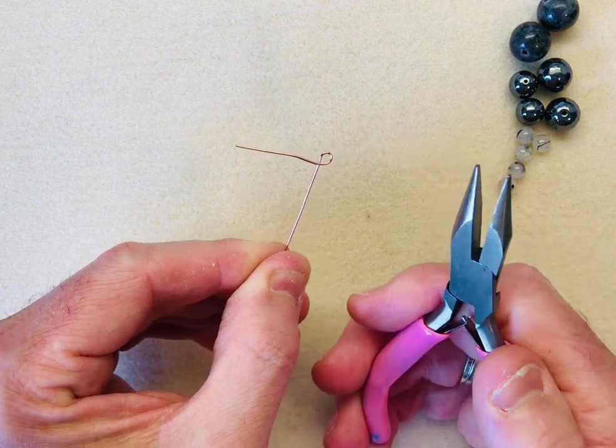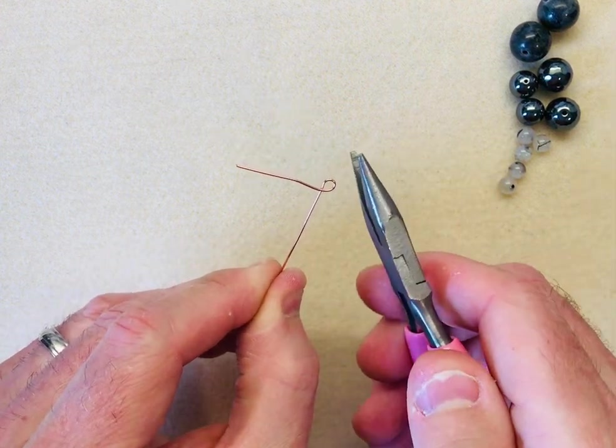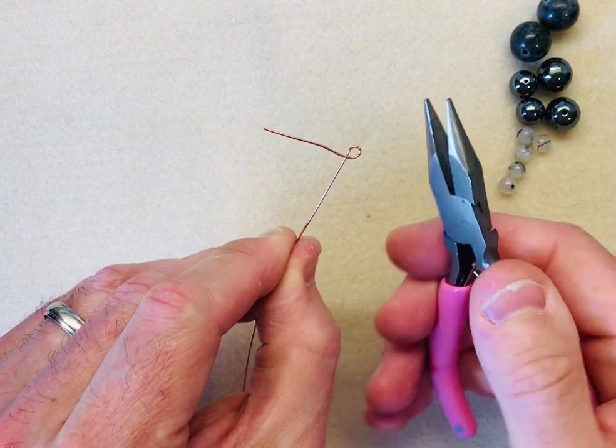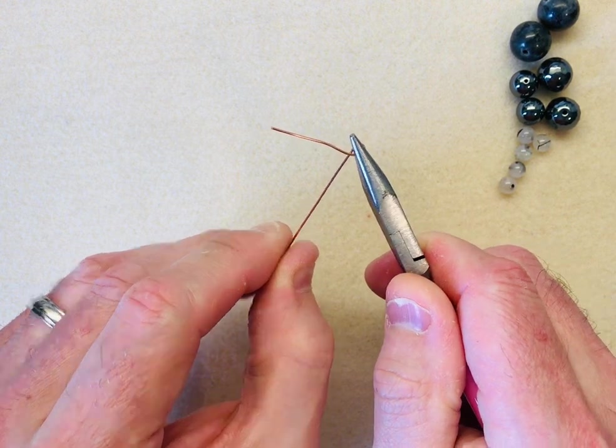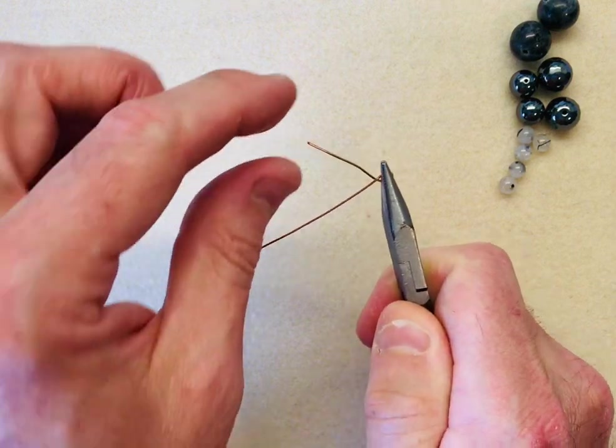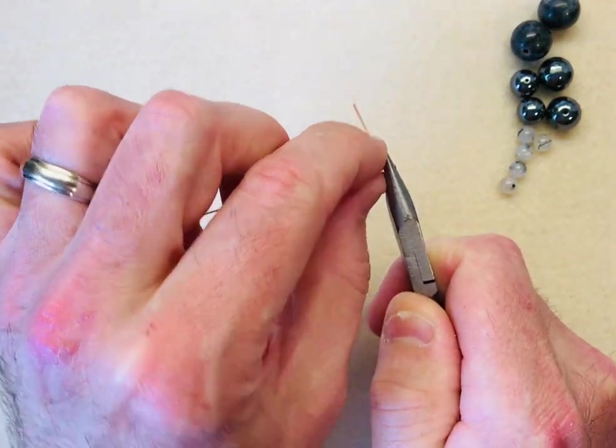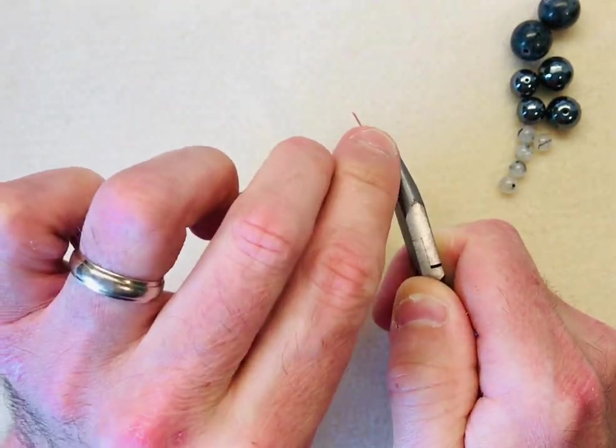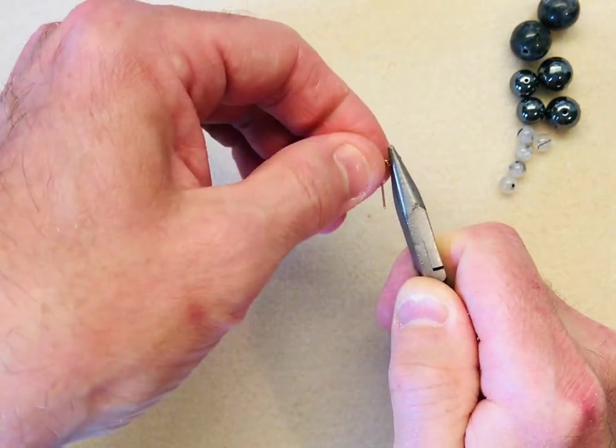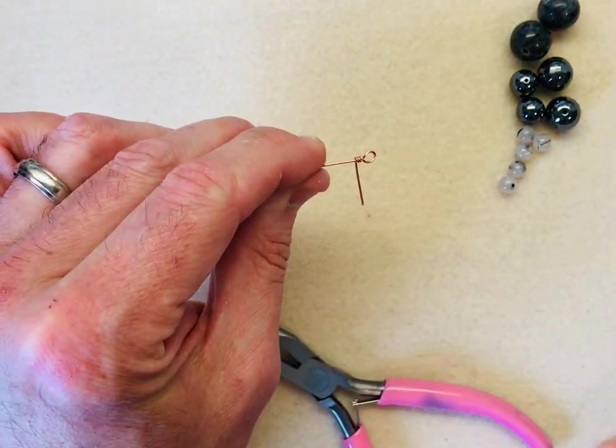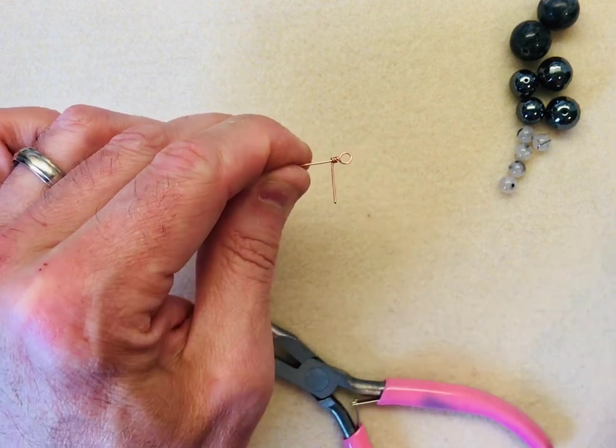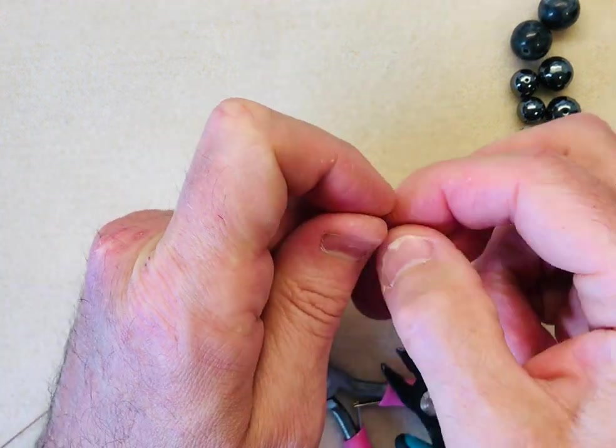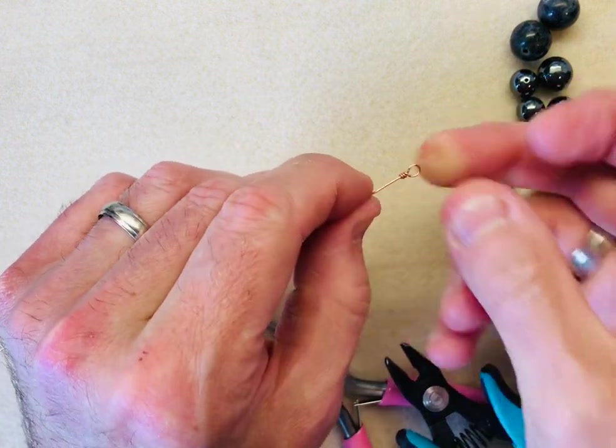Then we're going to take our flat nose pliers and instead of placing the plier through the loop we're going to hold the loop within the plier. Can you see where the two wires cross? We're going to hold that loop just to the right of where the wires cross and then we're going to take that shorter tail and wrap it three times - once, twice, three times around our longer wire. So now you can see we've got a little coil, we've got our loop and then we've got our excess wire. So we're just going to take our cutters and take off that excess wire. So that's the first part of our link.